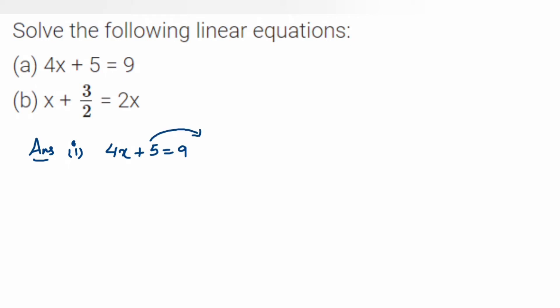So 4x will be equal to 9 minus 5. This is 4x is equal to 4. Now we have to isolate the variable, means we don't want this coefficient of x here. We have to separate it.